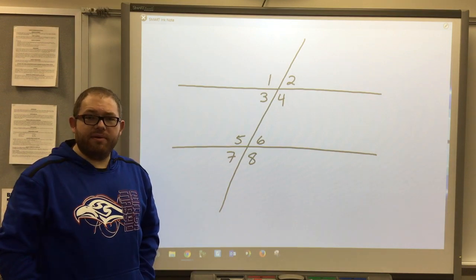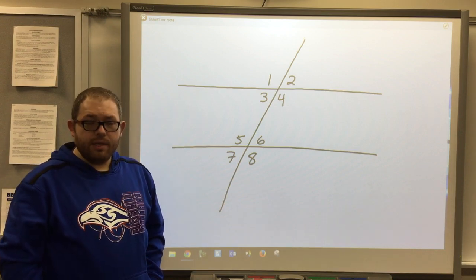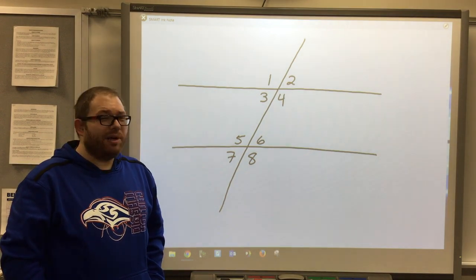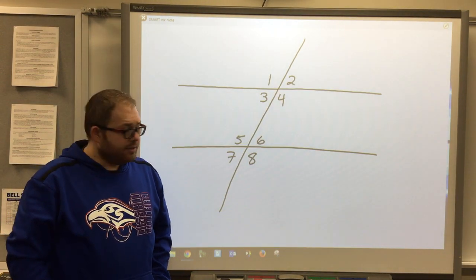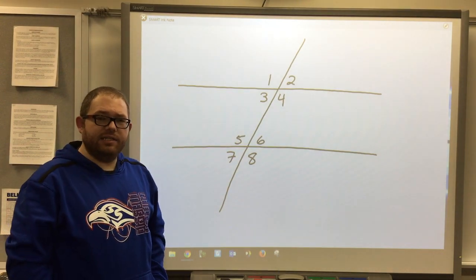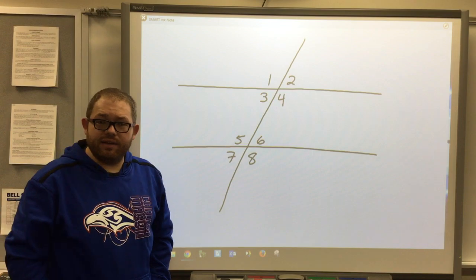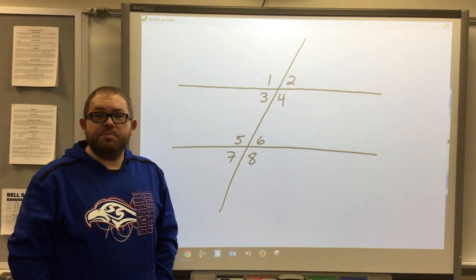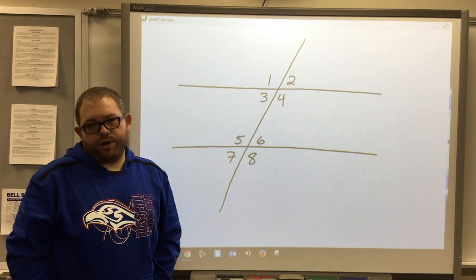The last type of angle that we're going to look at is called consecutive interior. Consecutive means that it's basically right next to the other one, but it's not adjacent. Interior, they're still on the inside. And so three and five, they are consecutive interior angles. Four and six are also consecutive interior angles. Those are sometimes referred to as same side interior angles as they will be on the same side of the transversal.